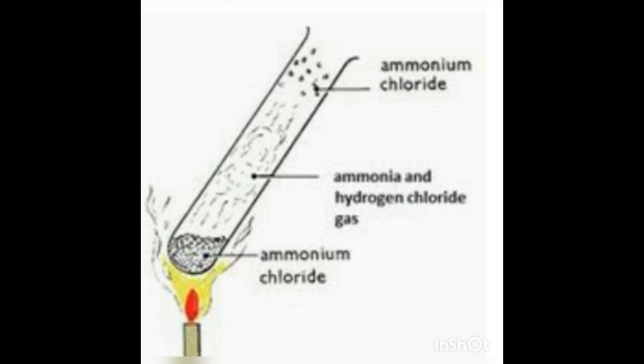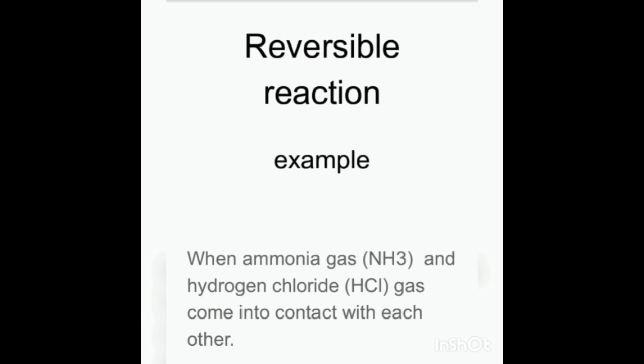Reversible reaction: a reversible reaction is one in which the reaction can easily be reversed. When two reactants react with each other, a product is formed. When that product is reacted again, the original reactants are reformed. Example: ammonia gas NH3 and hydrogen chloride HCl gas react with each other, forming a white cloud of ammonium chloride vapor (NH4Cl).